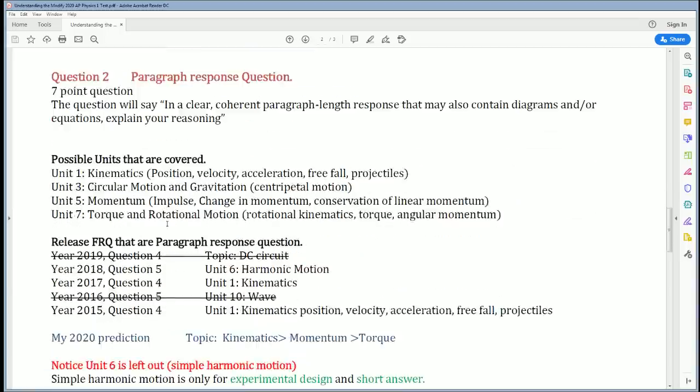The second question is called a paragraph response question. It is worth 7 points and will always say: 'In a clear, coherent paragraph-length response that may also contain diagrams and/or equations, explain your reasoning.' The possible units covered for this question are only four. Unit 1: kinematics. Unit 3: circular motion and gravitation. Unit 5: momentum. And Unit 7: torque and rotational motion.